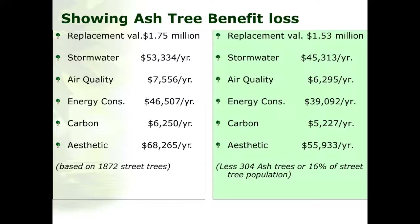As an example of what you can do with the data in iTreeStreets, I removed ash trees from the database to show the potential impacts of emerald ash borer. On the left we see benefits from the complete inventory, and on the right the impact of losses in stormwater interception, air quality, and energy conservation values. Losing 16% of street trees is not just a percentage — it has a real impact on ecosystem services, and this type of information can be used to raise awareness and advocate for tree planting or protection.